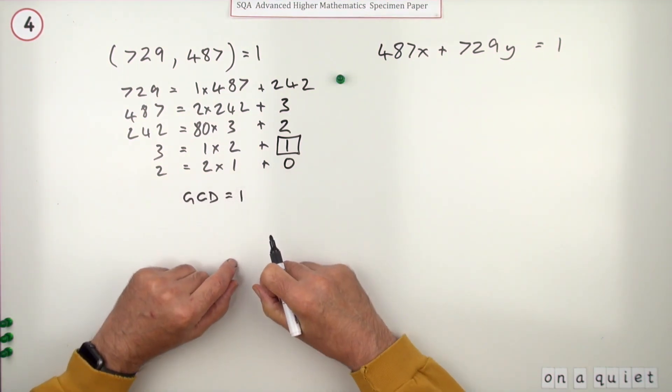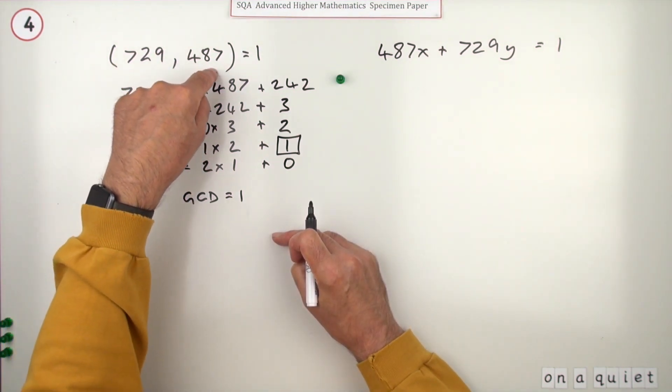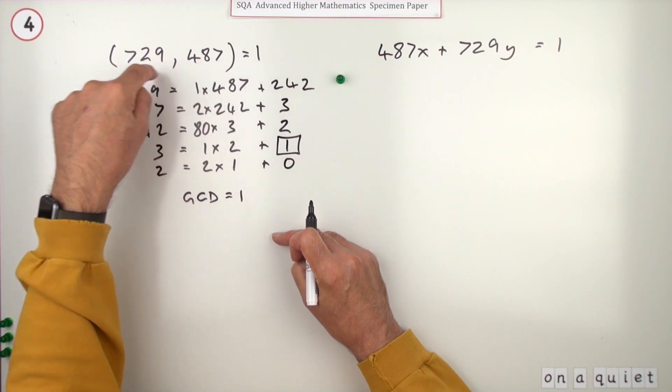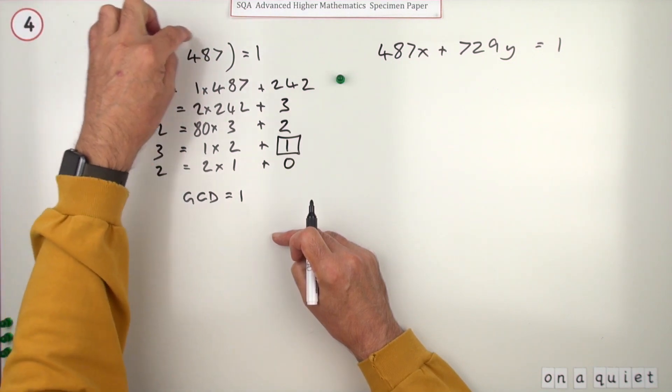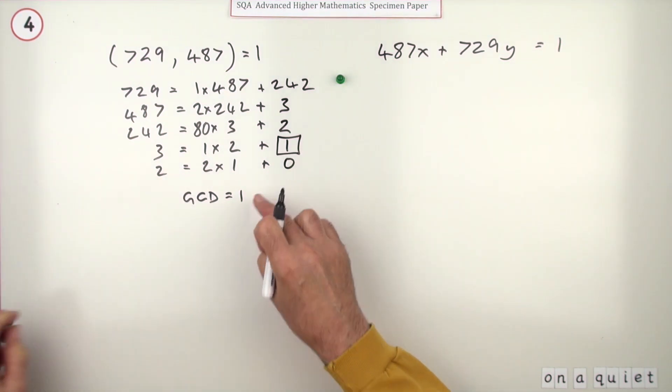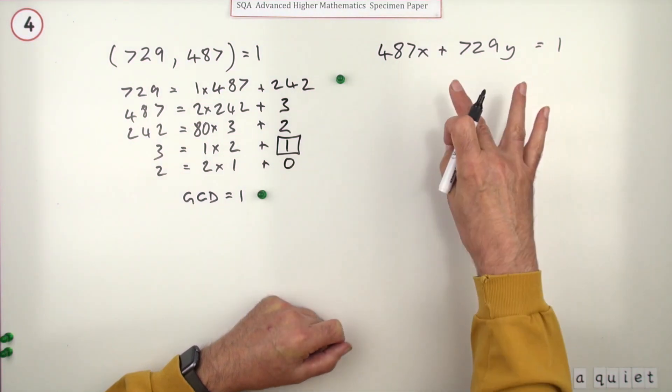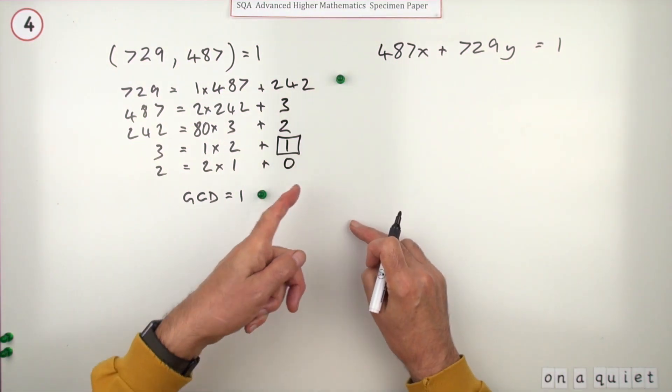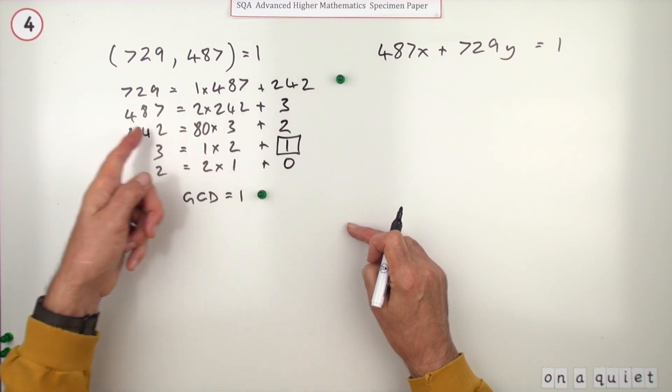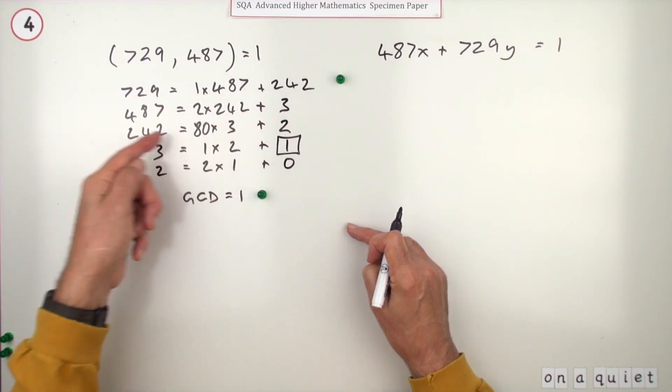So GCD = 1, meaning the biggest number dividing both is 1. In other words, they've got no factors in common. Incidentally, that means these numbers are called co-prime. Getting that gets you the second mark. Now for this part, you're simply going to gather that back up heading towards the 729.